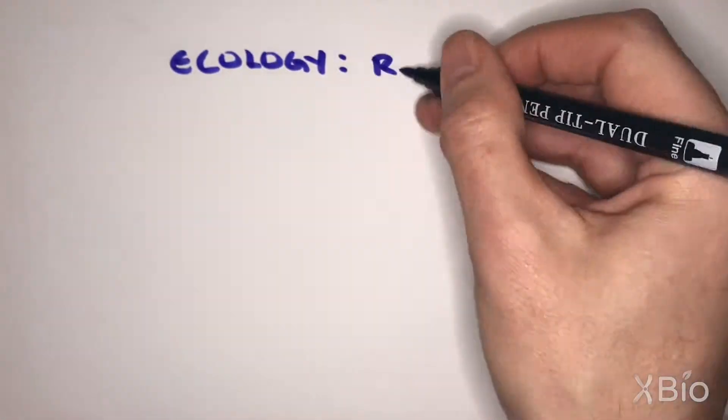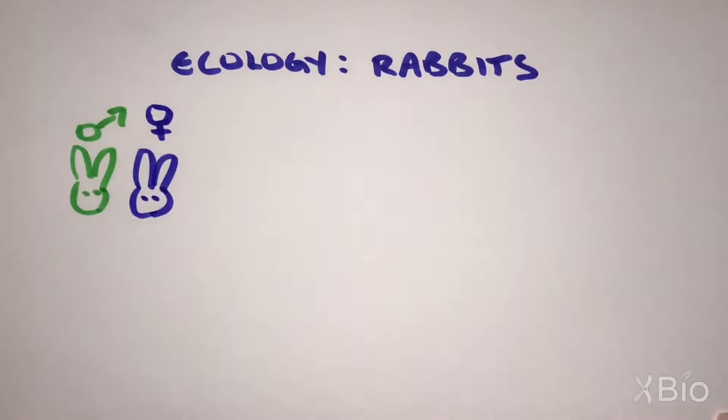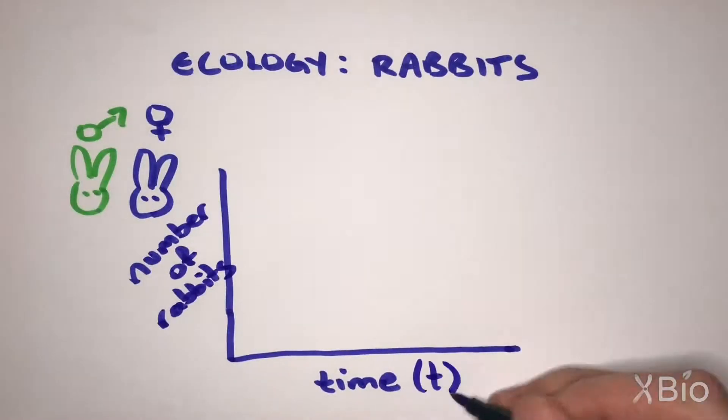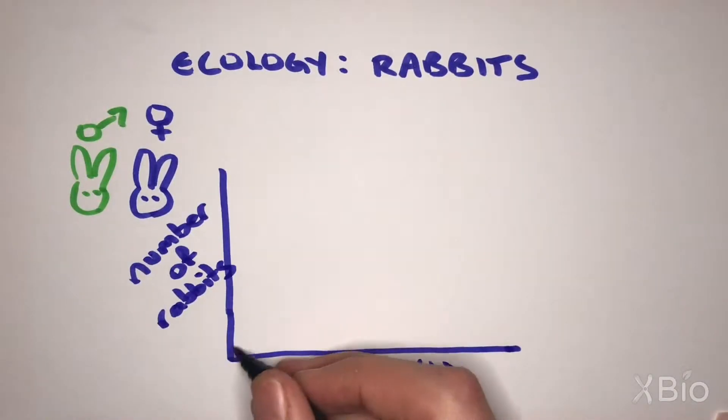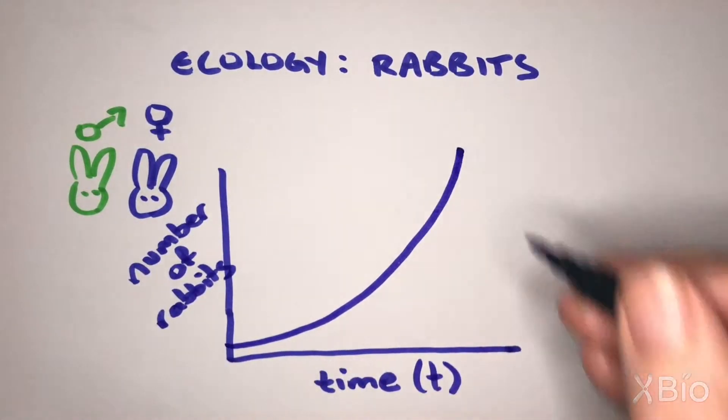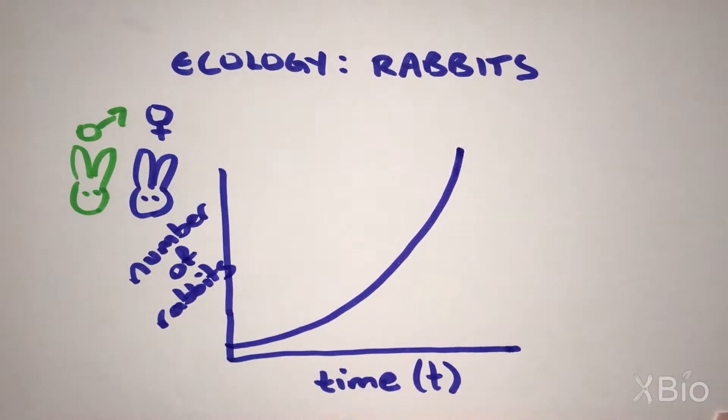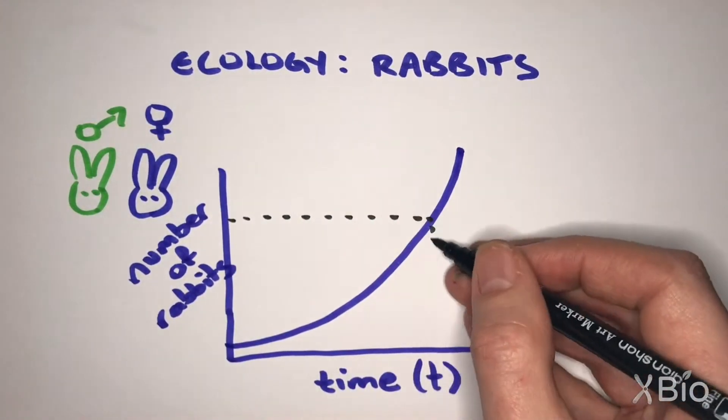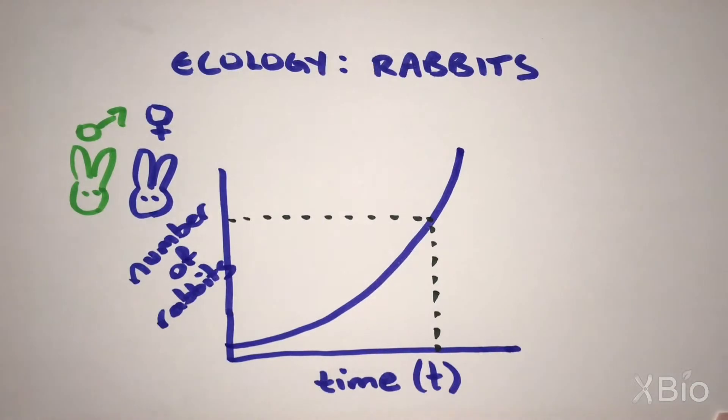Let's take an experimental example from ecology. How does the number of rabbits change with time? With unlimited food, the number of rabbits increases exponentially with time. The amount of rabbits simply depends on how long they have been reproducing.